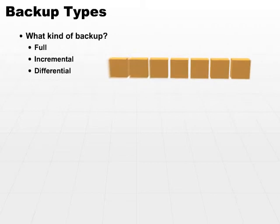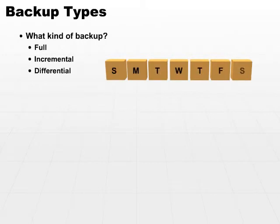For example, let's assume we do a full backup on Saturday night. On Sunday night, we would backup all the blocks that have changed since Saturday night's backup. Well, that's basically an incremental backup with no overlap factor. On Monday night, if we ran an incremental backup, we would only get the stuff that's changed on Monday.